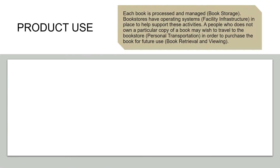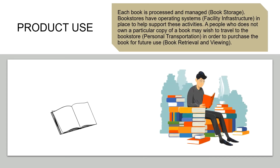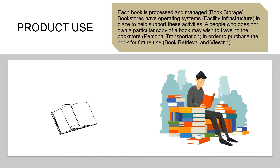Product use: after receipt at the bookstore, each book is processed and managed. Bookstores have operating systems in place to help support these activities. A person who does not own a particular copy of a book may wish to travel to the bookstore in order to purchase the book for future use.